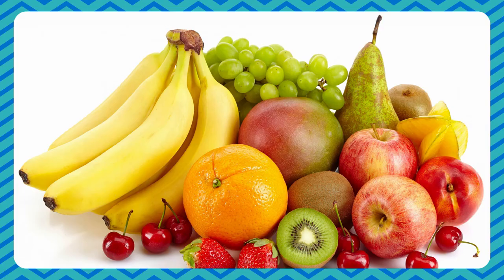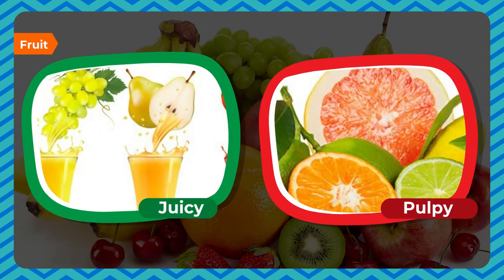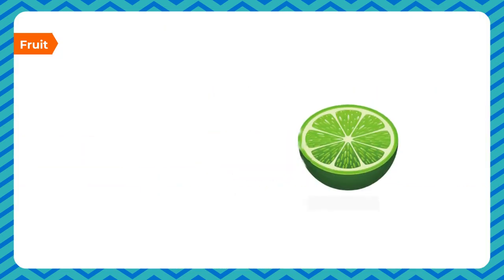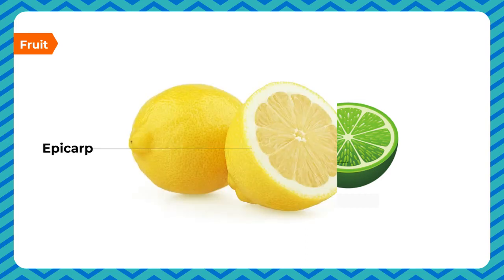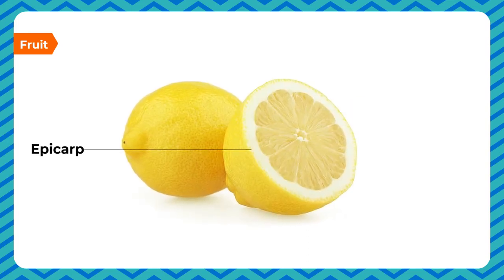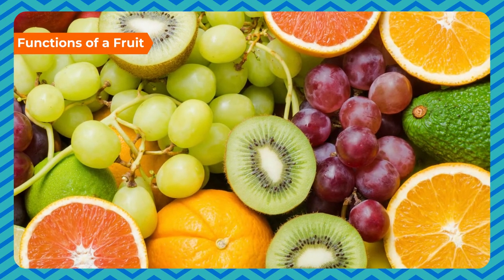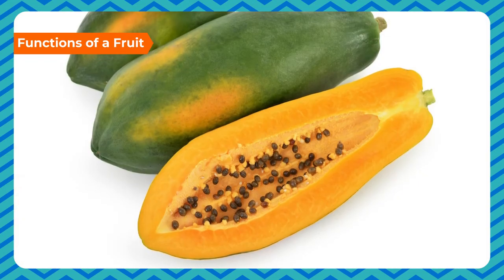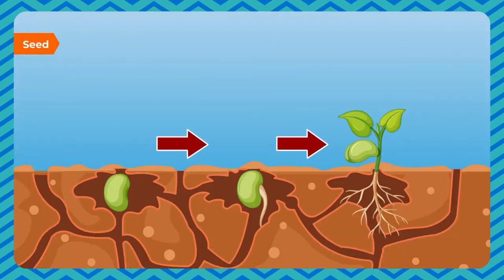A fruit is a mature and ripened ovary containing seeds — it is juicy, pulpy, and delicious. The wall of the fruit develops into the pericarp, made up of three layers: the epicarp (outermost skin), mesocarp (fleshy part), and endocarp (inner layer enclosing the seed). Fruits store food, protect seeds and store them for a longer period, and help in the dispersal of seeds.